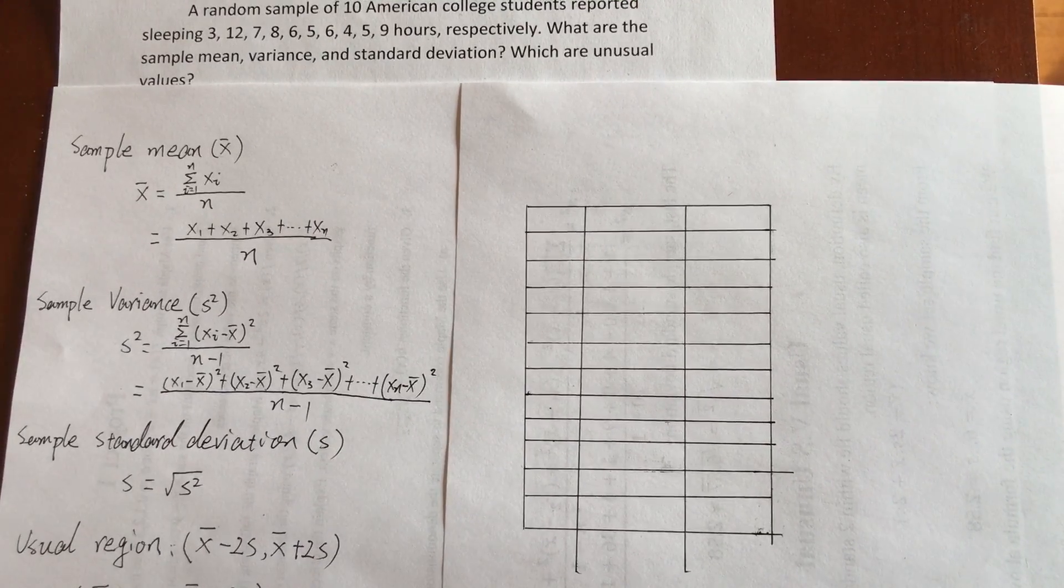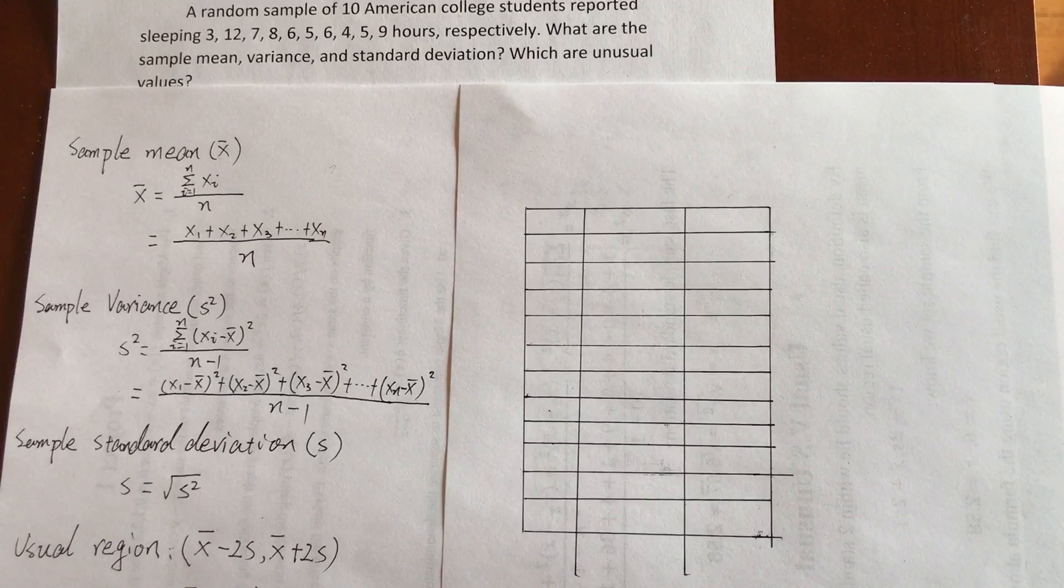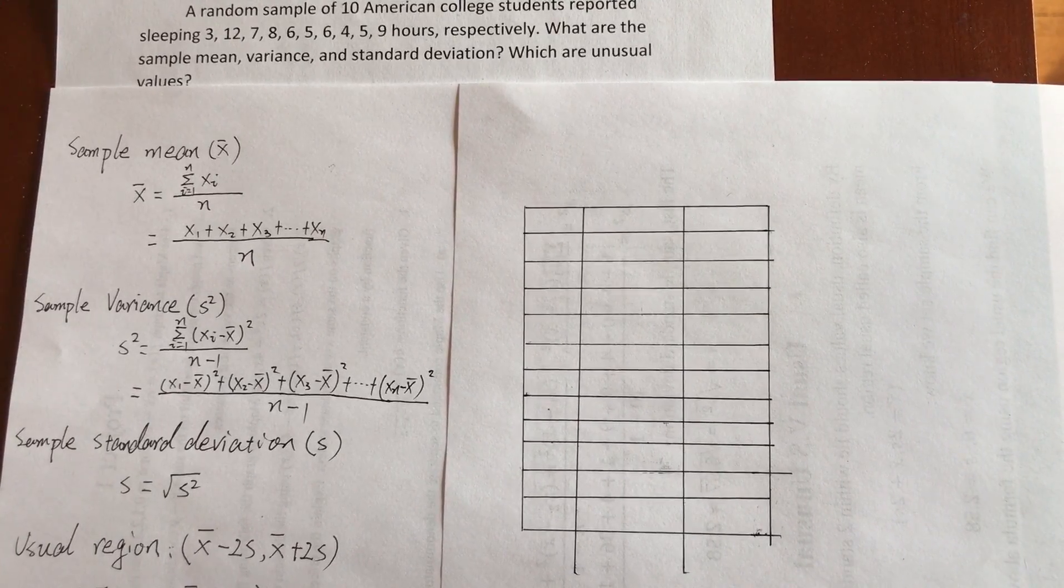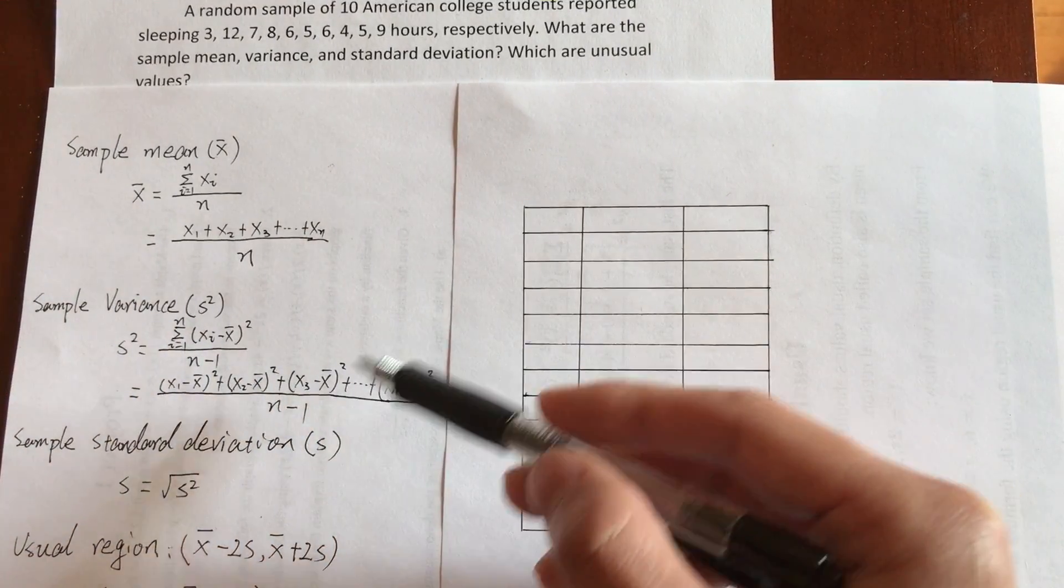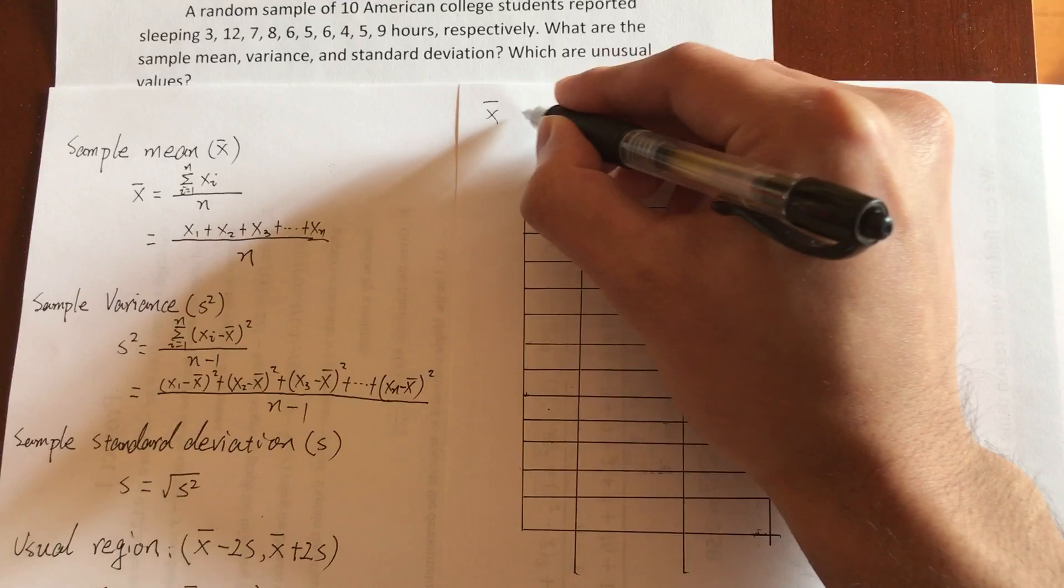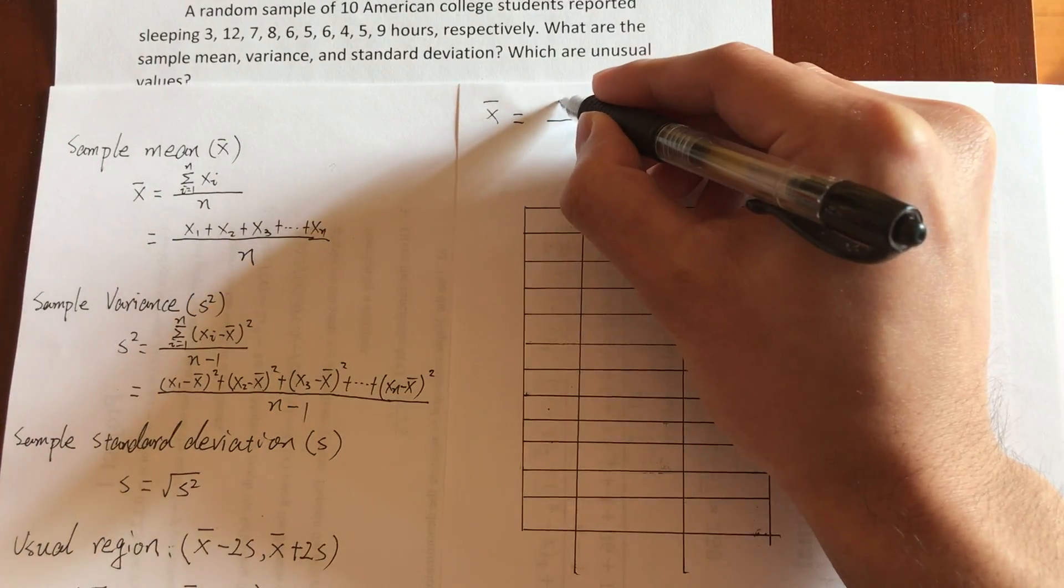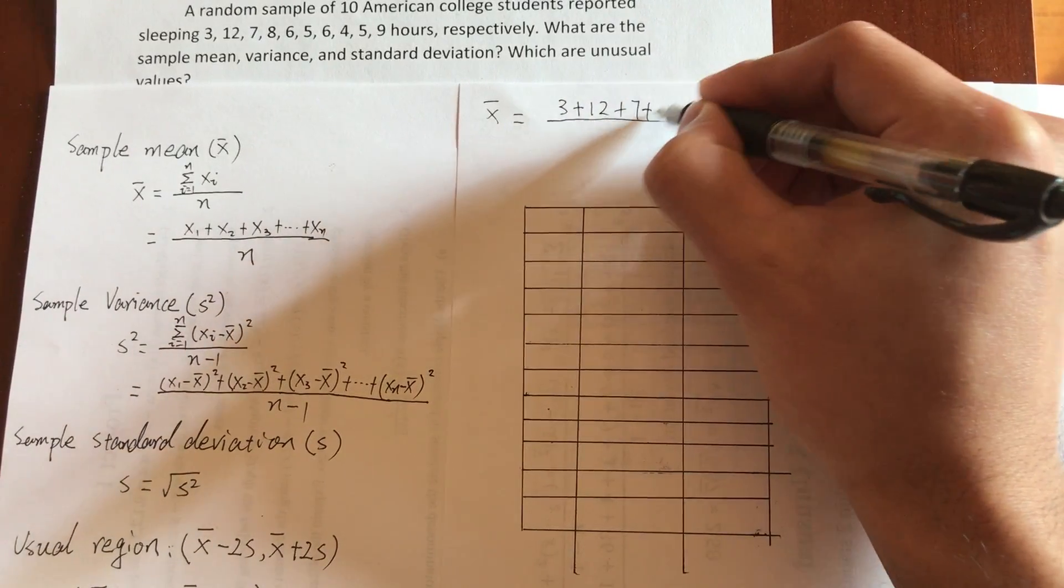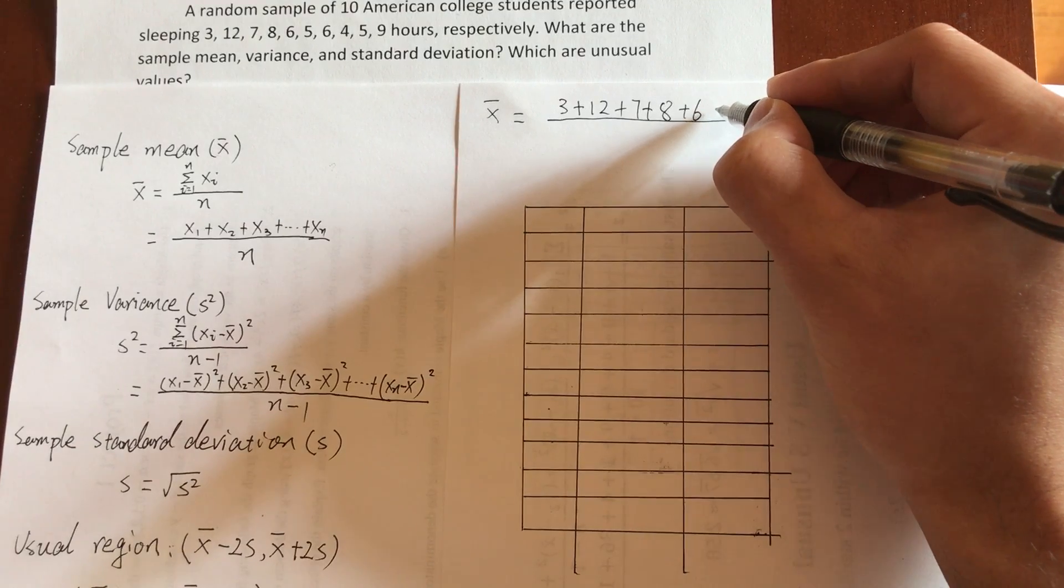This is the example asking for sample mean, standard deviation, variance, and unusual value. First we need to apply those formulas to figure them out. Sample mean: you add all the values and divide by sample size.